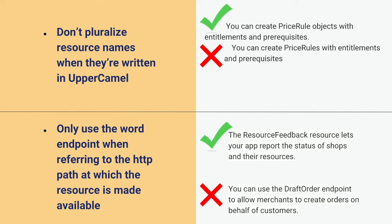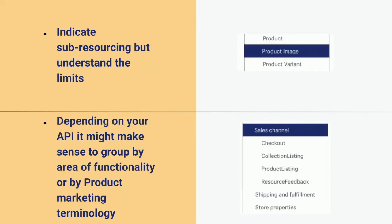We decided to not use the word 'endpoint' — we opted to use 'resources' instead. This may be the kind of thing where for your API it might make sense to use the word endpoint, and if so, go ahead and do that. But I do think it's important to develop your own house style. These different usages aren't incorrect — it's just a question of committing and being consistent and choosing one that works for you. Indicate sub-resourcing, but understand the limits and be mindful of the mental models within your organization that are going to impact the way you describe your APIs.